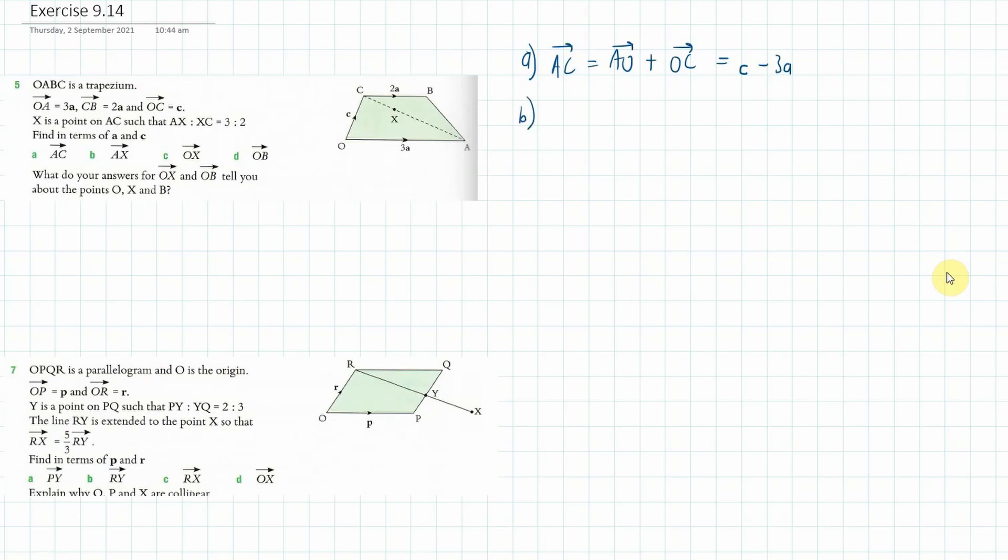Now B, this time I want to go A to X. Now you see that X is along the line AC and we know that we've got a ratio of 2 to 3. So we could divide it into 5 parts and 3 fifths of the way along is A to X. So it's going to be 3 fifths AC, which means we're going to have 3 fifths into C minus 3A.